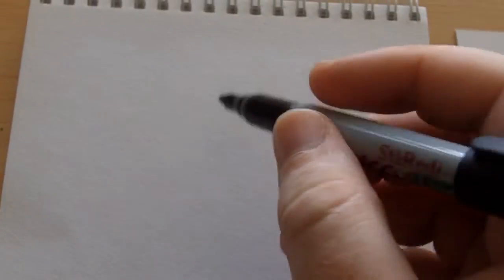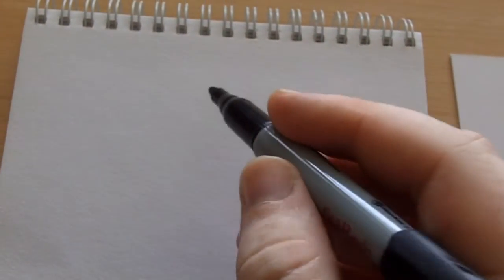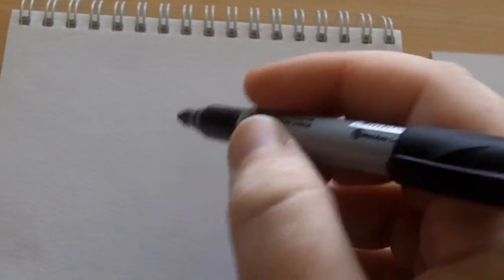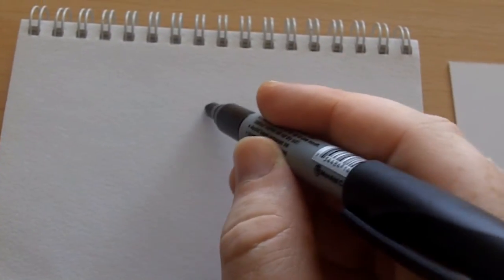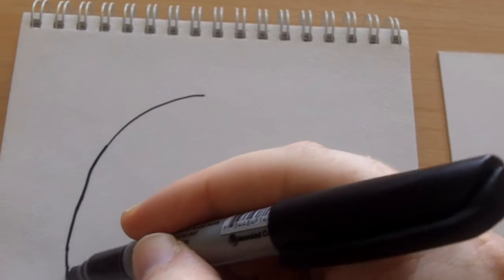Hi, this is Wayne Tully and this is day 30 in the drawing video journal series. I've just got a permanent marker today. I'm just gonna sketch something which will more than likely be some type of design like a demon, again.